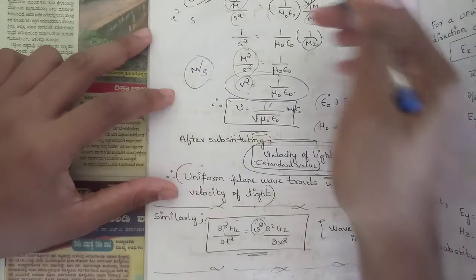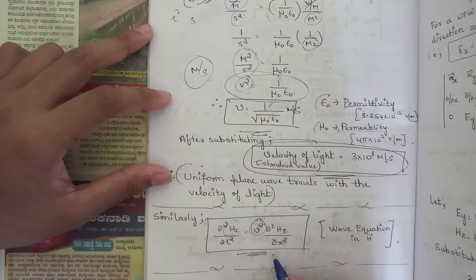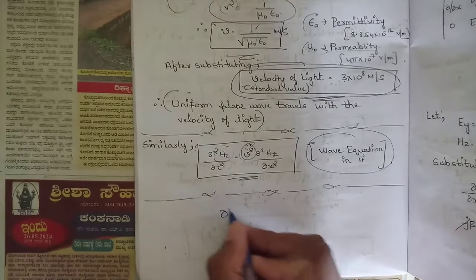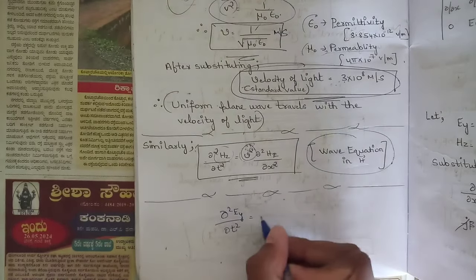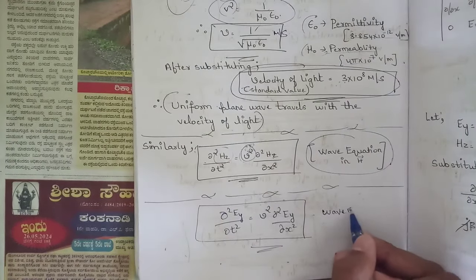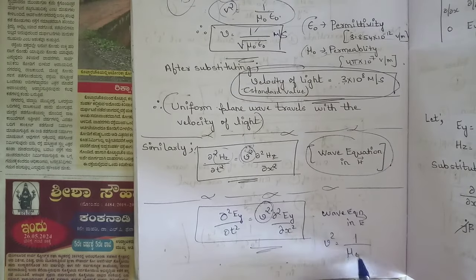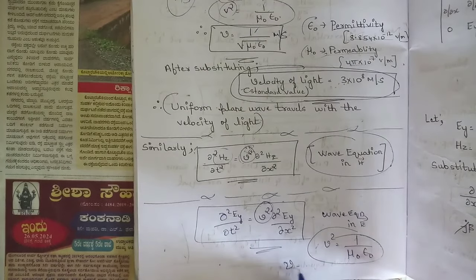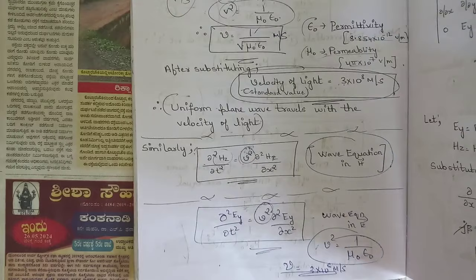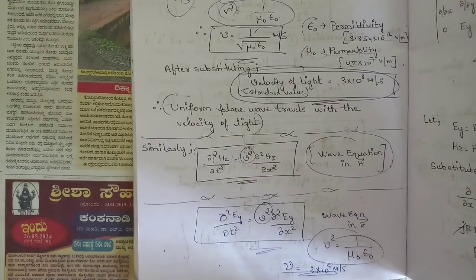Where v² equals 1 by mu naught epsilon naught. The simplified wave equation in terms of E is: dou² Ey by dou t² equals v² times dou² Ey by dou x². These two wave equations — in terms of electric field and magnetic field — are valid whenever a direction of propagation is mentioned in free space. v equals 3 times 10 to the power 8 meters per second.